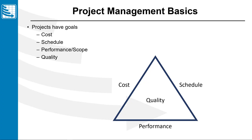Now our projects have goals. There's cost goals, schedule goals, performance scope goals, and quality goals, and they're all interdependent on each other. If I want my product to go faster, it's probably going to cost me more money. If I want to save some time in the schedule, I may have to reduce performance or scope, or I may have to increase costs. So they're interdependent on each other.